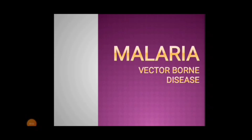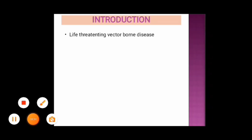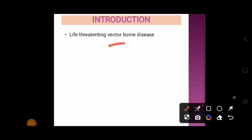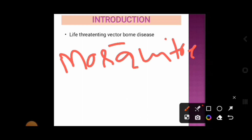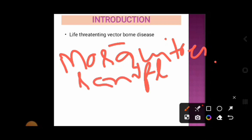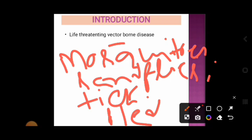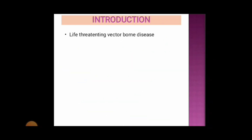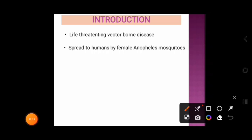Welcome to our channel Biological Concepts. In today's video we will discuss malaria, a vector-borne disease. Malaria is a life-threatening vector-borne disease. A vector is an organism that can transmit infectious pathogens between humans or from animals to humans. Examples of vectors include mosquitoes, sand flies, ticks, and fleas. Malaria is spread to humans by the female Anopheles mosquito.